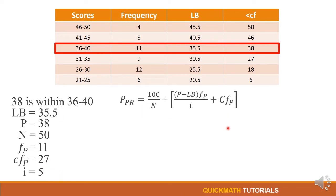And our interval is 5. So we got 5 by subtracting 40 and 35, so we have 5. Now let's use the formula and next we will substitute. So we have 100 over N will become 50, plus the raw score 38 minus the LB which is 35.5, times the frequency which is 11, over the interval which is 5, plus our cumulative frequency which is 27.